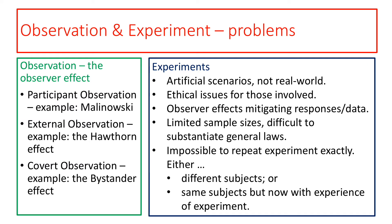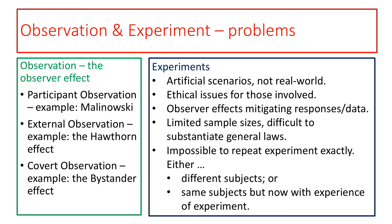Another way to observe human beings is not to be a participant, but rather to do it externally — for example with a camera, or through a one-way window. However, if you inform the participants that they are being observed, the Hawthorne effect evidences that human behaviour will change simply because they are being observed, as shown in classic examples from 1920s factories. A third way is covert observation — simply not telling participants. However, human behaviour will still change because people are aware of others around them. This is known as the bystander effect.